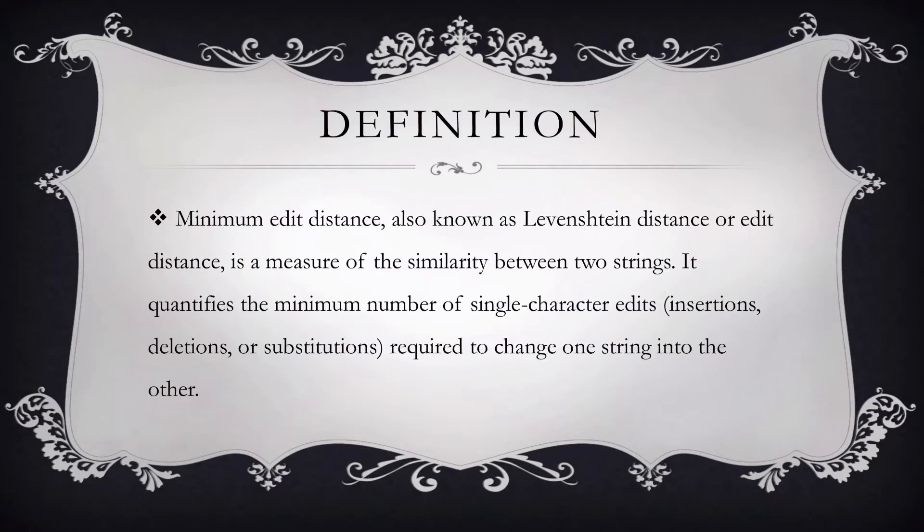Now let's see the classical definition of minimum edit distance. It is also known as Levenshtein distance or edit distance, which is a measure of similarity between two strings. It quantifies the minimum number of single character edits. There are three operations: insertions, deletions, or substitutions.